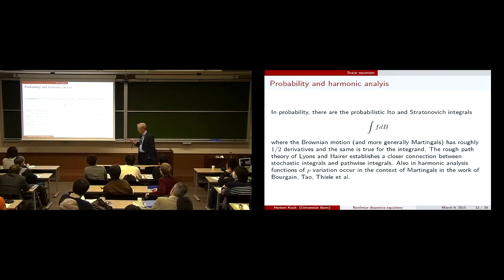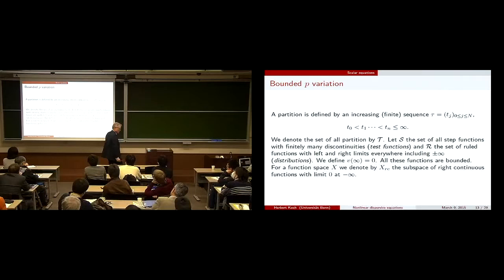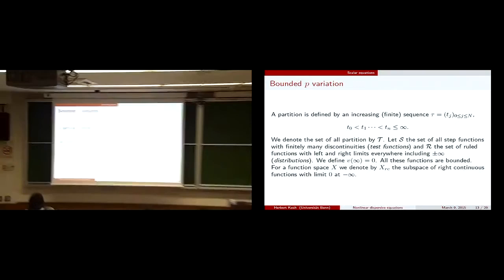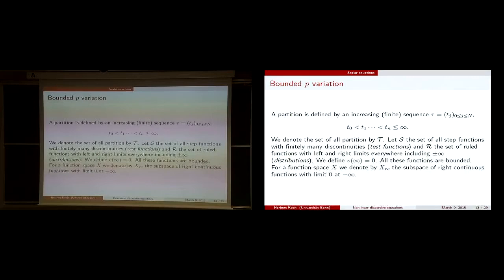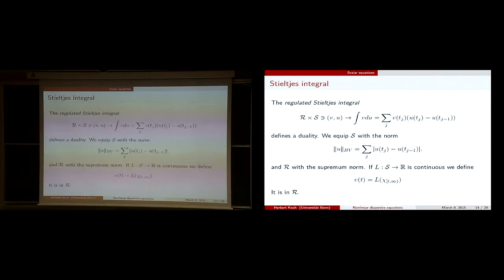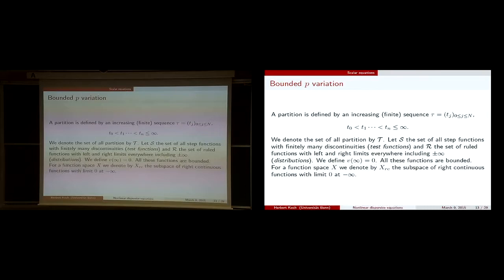What is bounded p-variation? Let's look at functions defined on R. We look at a partition — an increasing sequence of numbers — and we allow the last one to equal infinity. We denote this set of partitions by tau. We define a set of functions which are step functions with finitely many discontinuities that play the role of test functions in analysis, where at a point of discontinuity they might have a different value than the limit from the left or right.